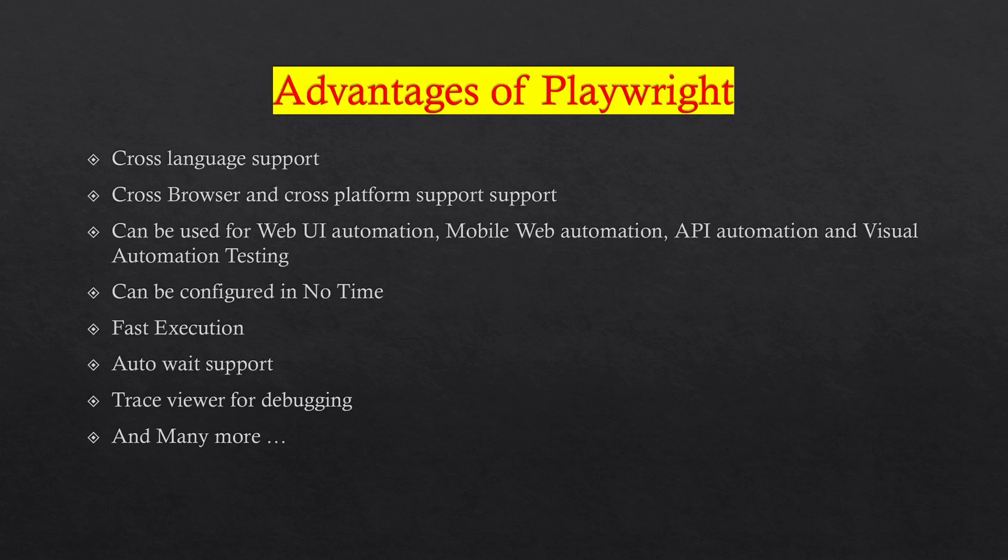If you write an automation script for any particular feature, you can test that feature in different browsers — Chromium, Chrome, Firefox, and WebKit are all supported. Cross-platform means it supports different operating systems: Windows, Linux, and Mac.